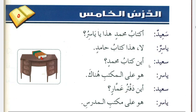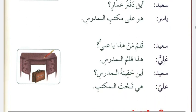سعید asks: أين كتاب محمد؟ Where is the book of Muhammad? Yasir replies: هو على المكتب هناك. It is on the table there. سعید then asks: أين دفتر عمار؟ Where is the notebook of Ammar? Yasir replies: هو على مكتب المدرس. It is on the table of the teacher.